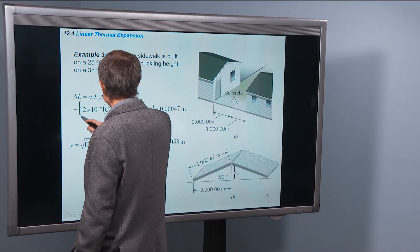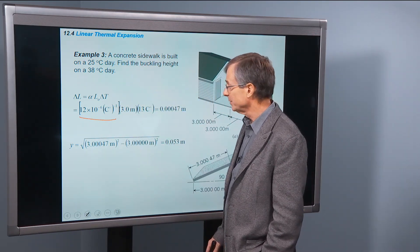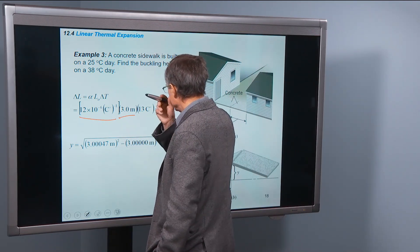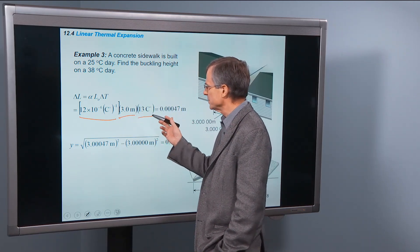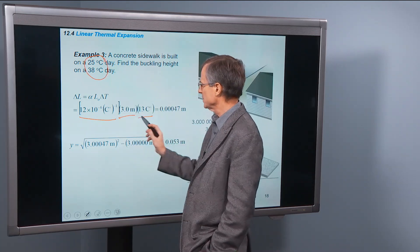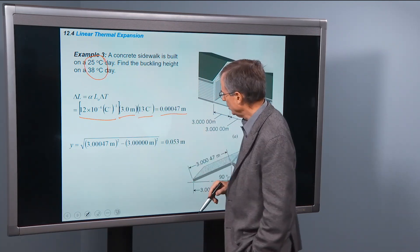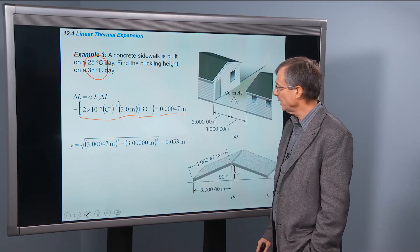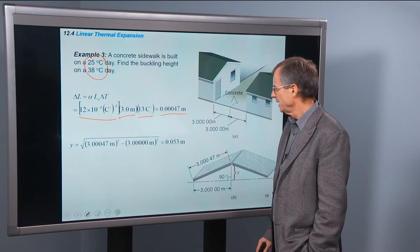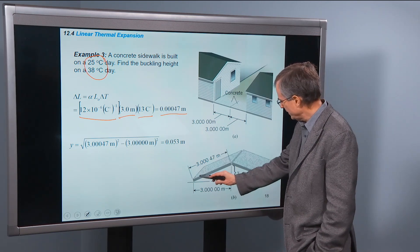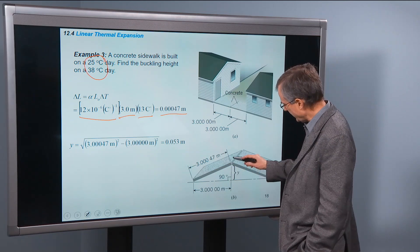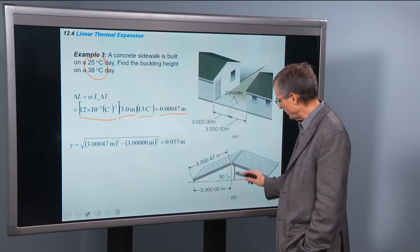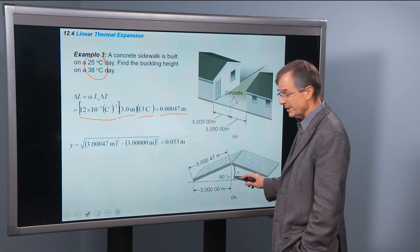Well, we look up the expansion coefficient for concrete, which turns out to be 12 times 10 to the minus 6, inverse degrees C. The original length, 3 meters. The change in the temperature is 13 degrees C, so that's the difference between these two temperatures, 13 degrees C, is 0.00047 meters. Well, that doesn't sound like a lot. That's 0.047 centimeters. However, if you get this is the new length, this is the original length, and you figure out using trigonometry how much it has to rise up as a result, it's a fairly significant number.